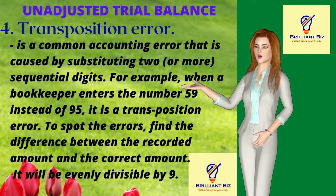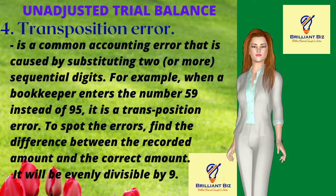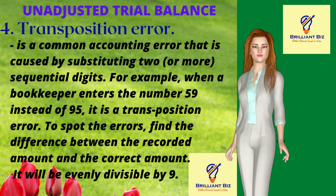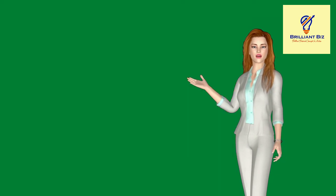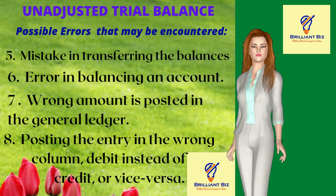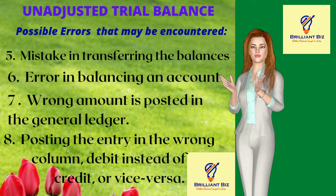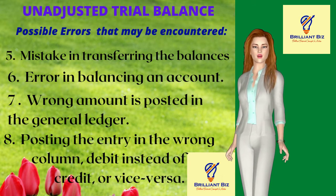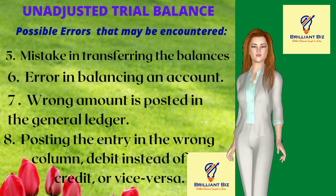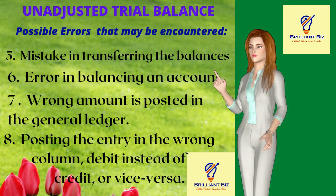To spot the errors, find the difference between the recorded amount and the correct amount — it will be evenly divisible by nine. Number five: a mistake in transferring the balances to the unadjusted trial balance. Number six: error in balancing an account. Number seven: wrong amount is posted in the general ledger. Number eight: posting the entry in the wrong column, debit instead of credit or vice versa.